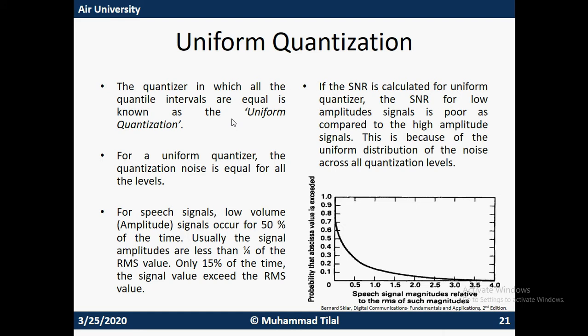That problem is that when we look at a speech signal, generally 50% of the time we are having a low volume signal, which means anybody who is speaking will be speaking in their natural tone or low volume. You can precisely say they will be speaking using their low volume area. These amplitudes are basically less than 1/4th of the RMS value. Generally the peak value is higher and the RMS value is lower. Imagine a signal for which the peak amplitude is less than 1/4th of the RMS value.